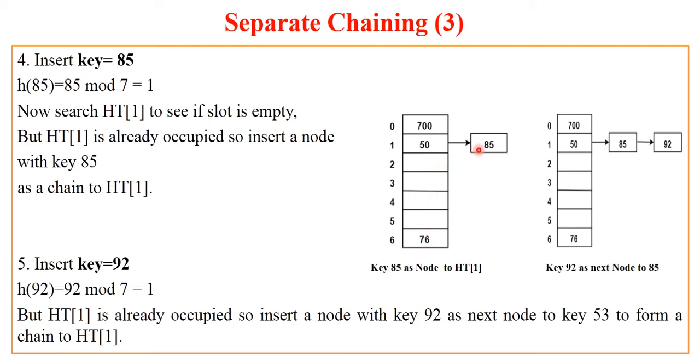Rather, this 85 is added as a node to the hash table index 1. So this is called separate chaining. We are forming separate chains for all the synonyms which are creating collision while insertion.